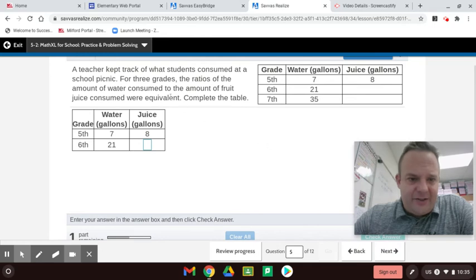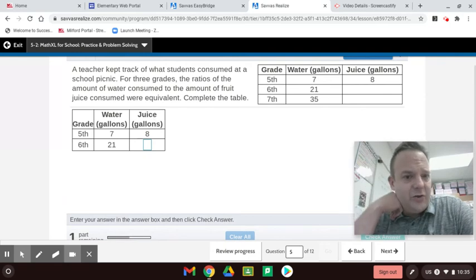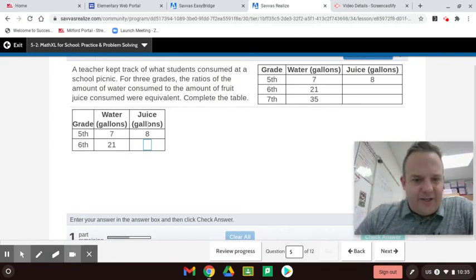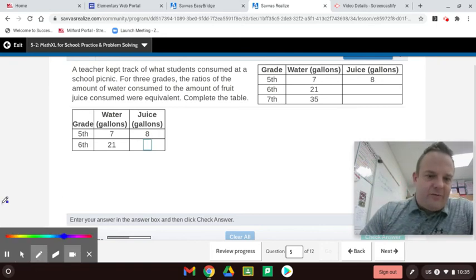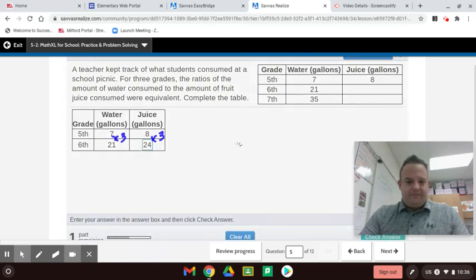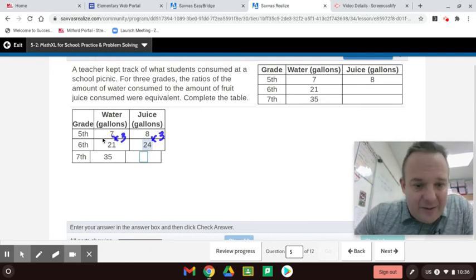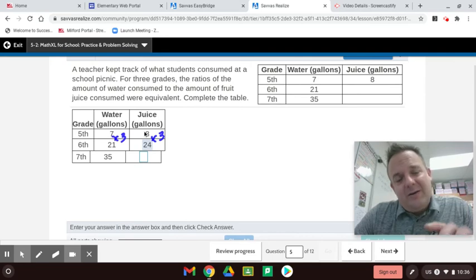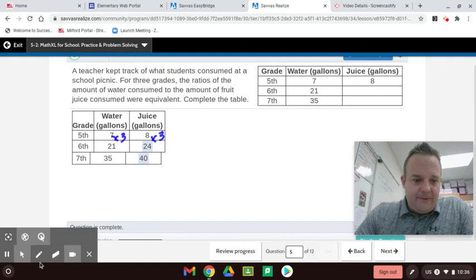Now for the meat and potatoes. A teacher kept track of what students consumed at a school picnic for 3 grades. The ratio of the amount of water consumed to the amount of fruit juice consumed were equivalent. Complete the table. So in 5th grade, we had 7 gallons of water to 8 gallons of juice. Now what you want to do here is look for a relationship in the ratio table. So 7 times what is 21? 7 times 3 is 21. Now if you multiply by 3 here, I multiply by 3 here. 8 times 3 is 24. So 24 goes in. Now we do it again. 7 times what is 35? That's right. 5. So 7 times 5 is 35. That's your magic multiplier or your relationship. Your mathematical relationship. 8 times 5 is 40. That's it.